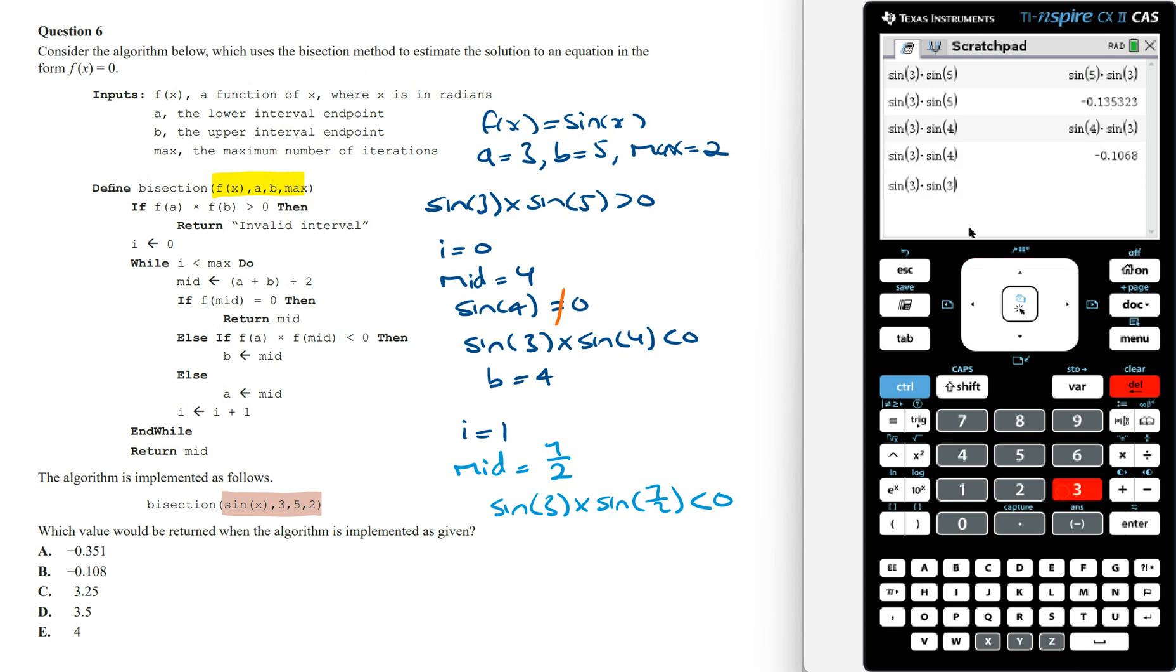7 on 2 is the same as 3.5. This is less than 0, which means the value of b is going to equal the mid value, which is 7 on 2.